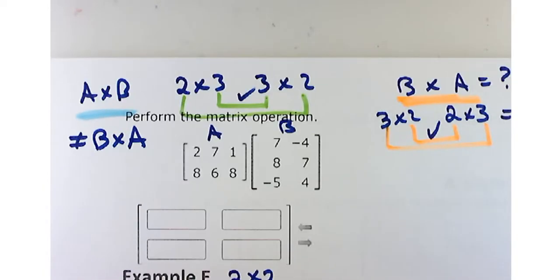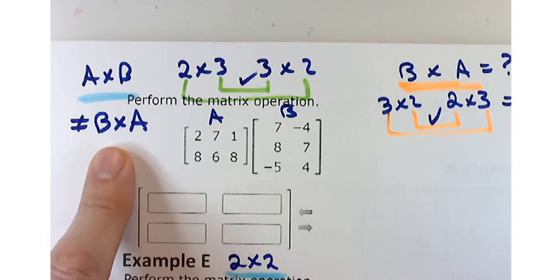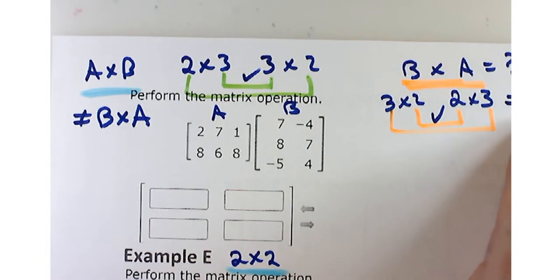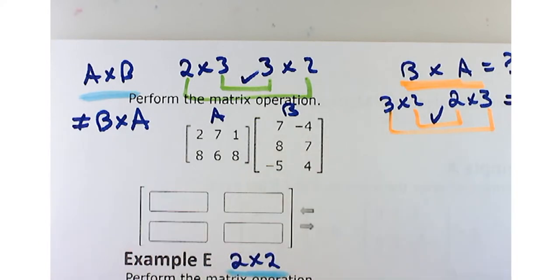Matrix multiplication is not commutative. Forever and a day, that's been our little safety net — you could add 7 plus 8 and get the same as 8 plus 7, multiply 7 times 8 and get the same as 8 times 7. The order didn't matter. Subtraction is one place where it does matter — 7 minus 8 is not the same as 8 minus 7. But matrix multiplication is not commutative. One way you get a 3 by 3, the other way you get a 2 by 2.